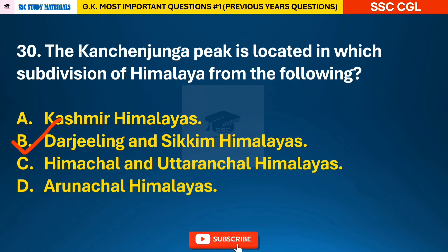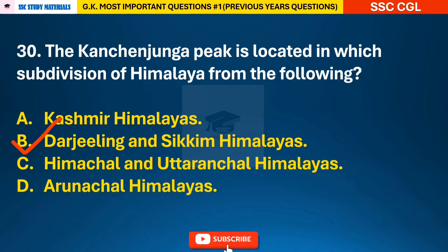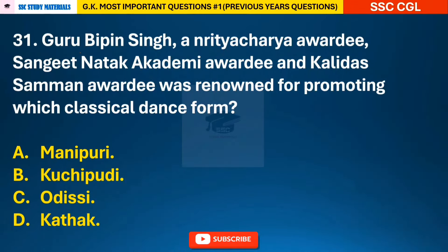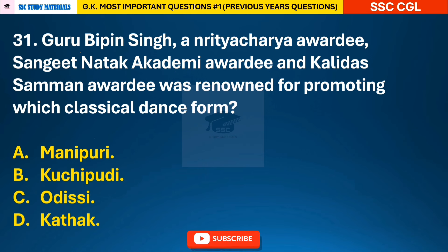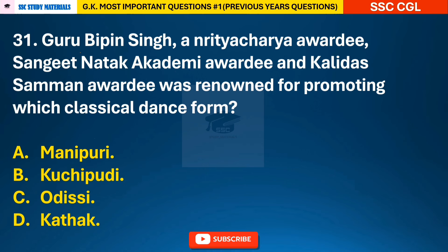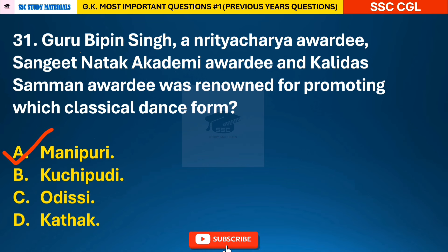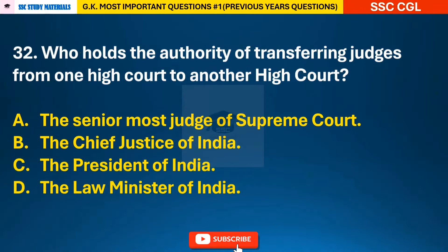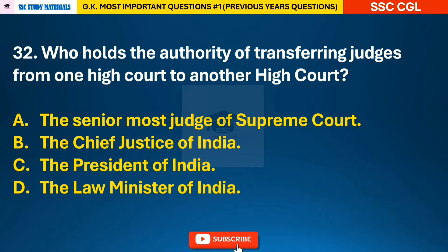Question 31: Guru Bipin Singh, a Nrityacharya awardee, Sangeet Natak Academy awardee and Kalidas Samman awardee, was renowned for promoting which classical dance form? — answer A: Manipuri. Question 32: Who holds the authority of transferring judges from one High Court to another High Court?